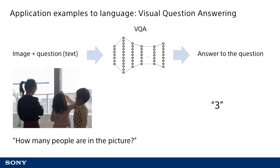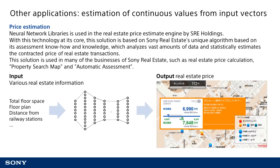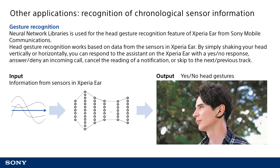Finally, I will discuss examples of application to things other than images and language. One simple example is handling input vectors — using deep learning to solve identification and regression problems previously handled by conventional machine learning. For example, in the case of the real estate price estimate engine used by SRE Holdings, the neural network is trained to output real estate prices as a continuous value from input feature vectors containing various types of real estate information, making it possible to estimate the assessed price of real estate that is not currently for sale.